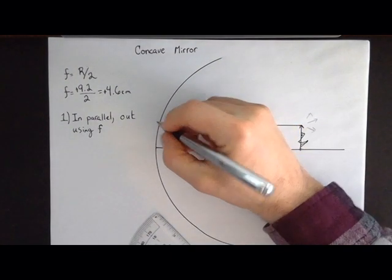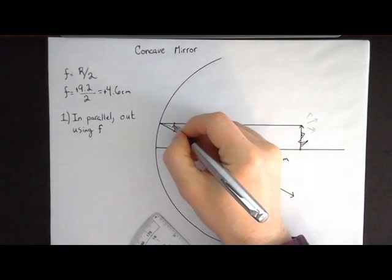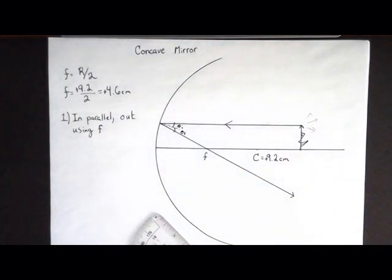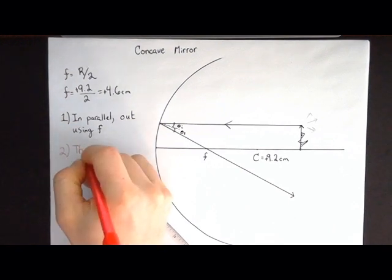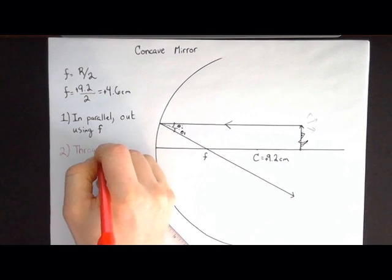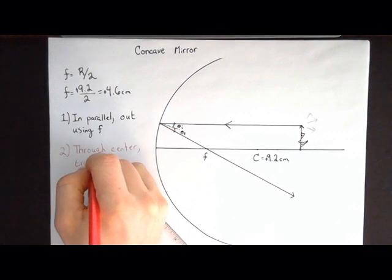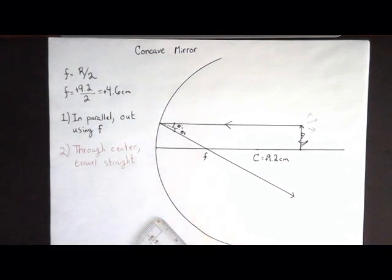You can see if you zoom in on this over here, why does it do that? Good old law of reflection. The incoming angle and the outgoing angle are the same. Ray number two: rays that go through the center travel straight.